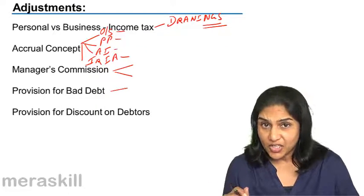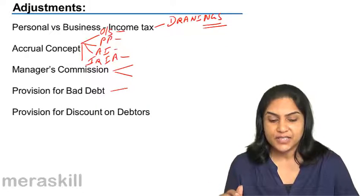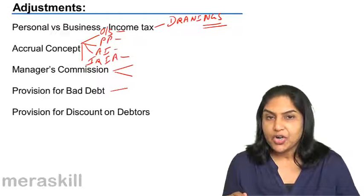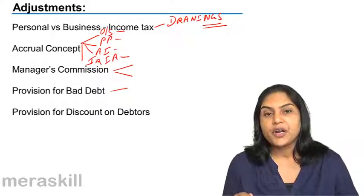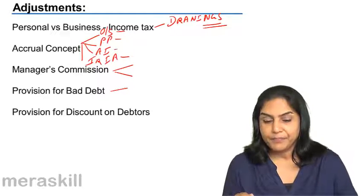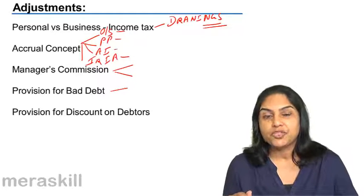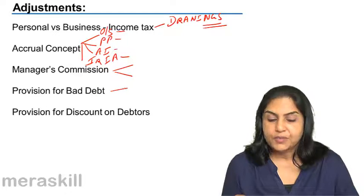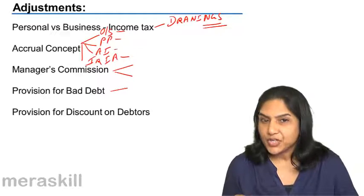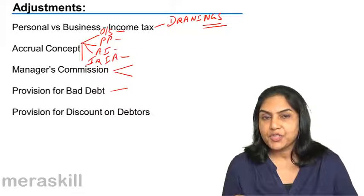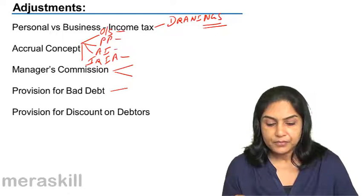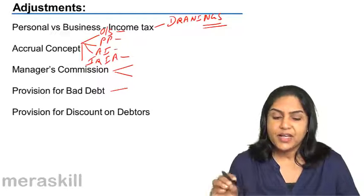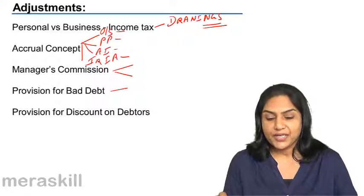Any anticipated losses are provided for as per the conservatism concept. How do we make a provision for doubtful debts? By debiting the profit and loss account — profit and loss account debit to provision for doubtful debts. Bad debts, if any, are written off to the provision for doubtful debts. This provision is sometimes computed as a percentage on debtors; if so, it is on debtors less all bad debts — the net balance of debtors — that the provision for doubtful debts is computed.